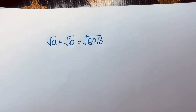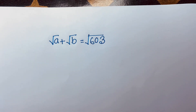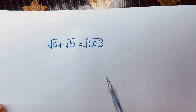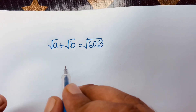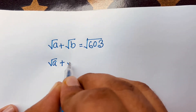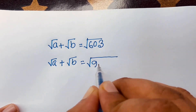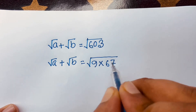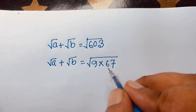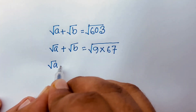Hello everyone. How to solve this square root problem: square root of a plus square root of b is equal to square root of 603. We'll find out the value of a and b in this equation. First, I can see it will be square root of 9 times 67 — look, 9 times 67 is 603.